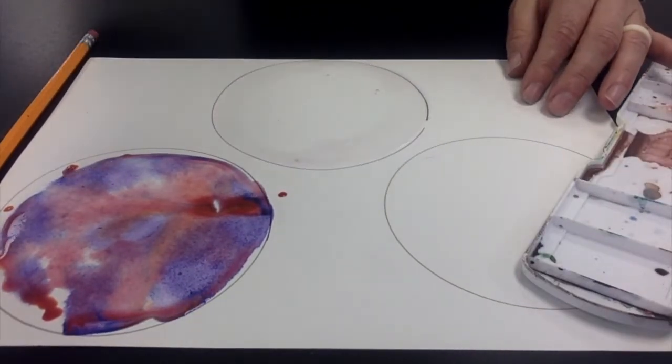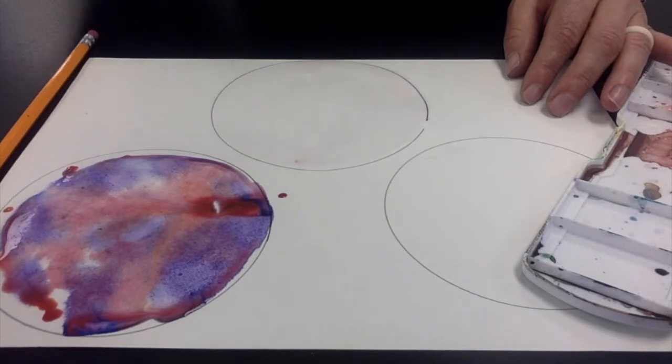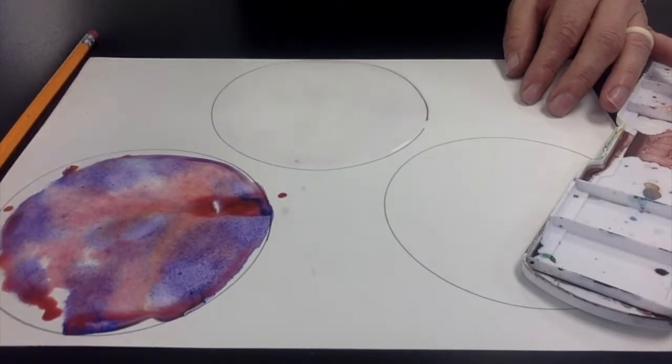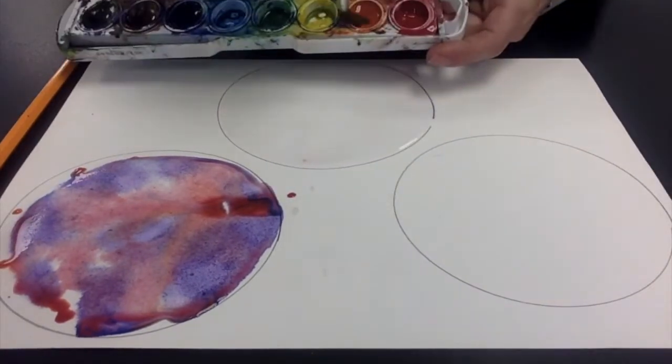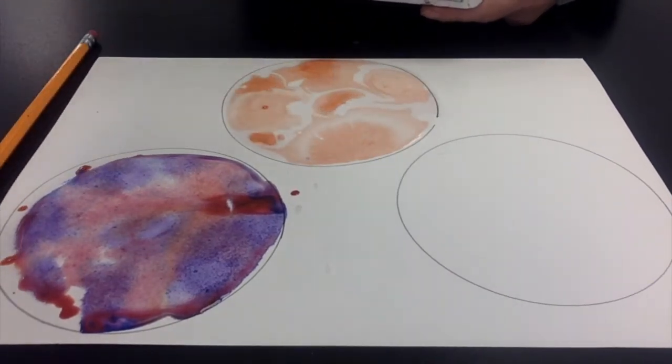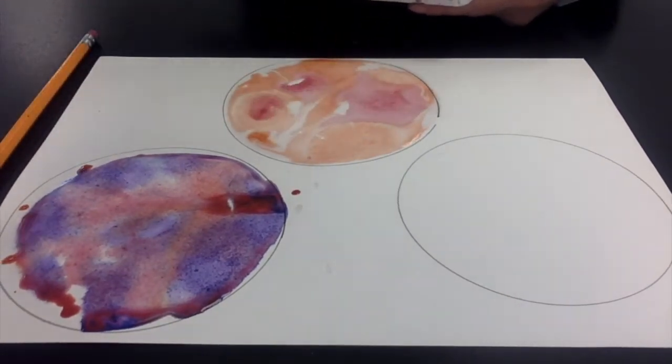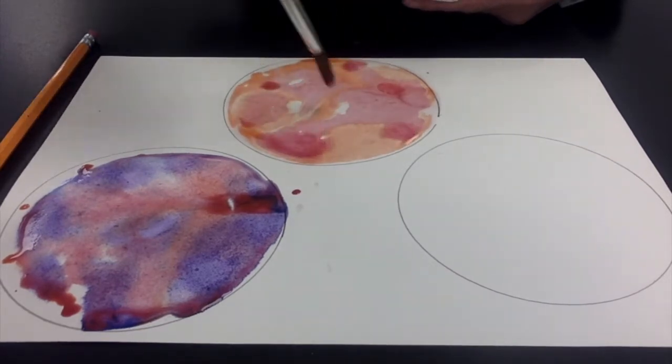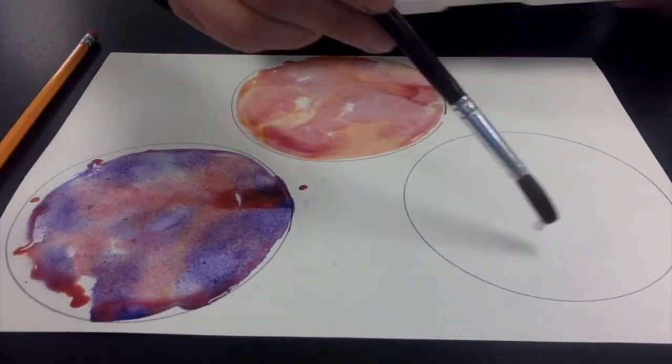So when I do my second circle today I'm going to make sure that I get all the way up to the edge of my circles using the brush and plenty of water, dip that brush into your paints and again let the watercolor do its magic. This is called wet on wet watercolor technique.